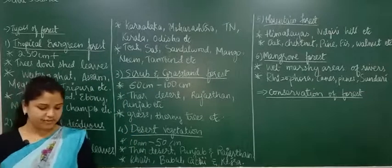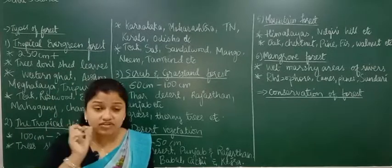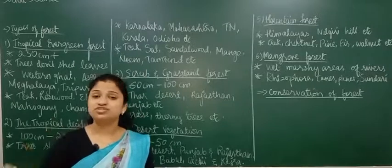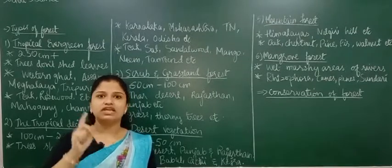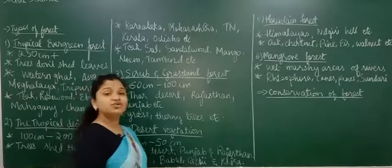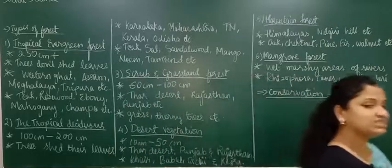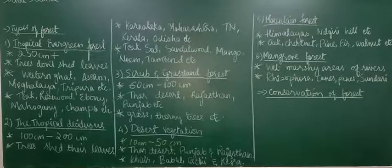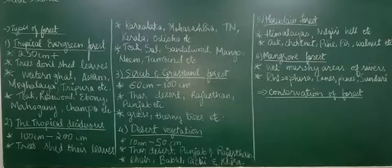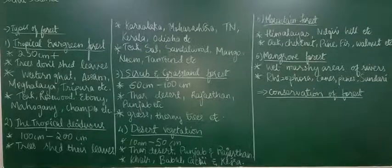There are ten measures for conservation of forest — a very important exam question. At least remember any eight. First: control deforestation — stop the cutting down of trees. Second: restriction on grazing — we must keep grazing in control and not allow animals to eat the grass completely. Third: control of forest fires — forest fires are common especially in summer when dry forests catch fire, and they are very difficult to control.